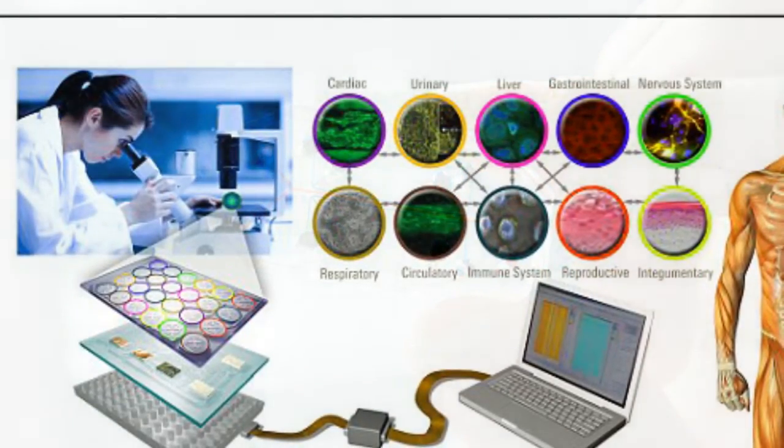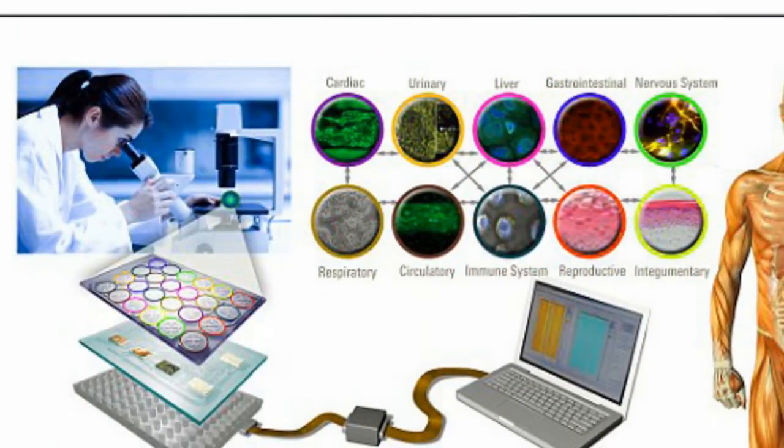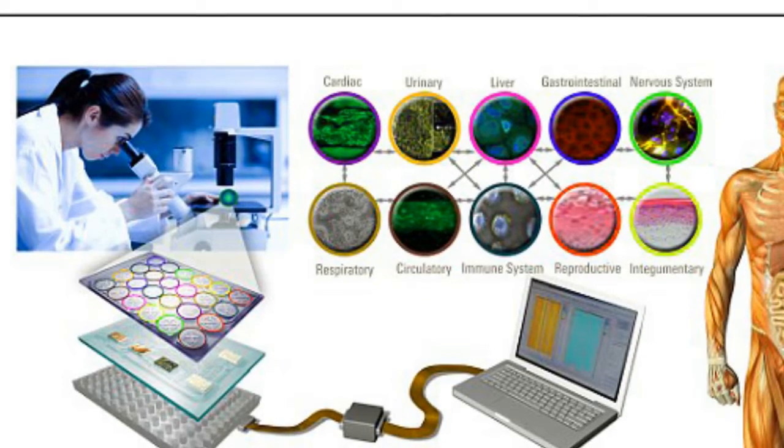Nutrients are supplied by blood that flows along the channels. Researchers at Harvard University have been able to create kidneys, gut, bone marrow and lungs on a chip using the technique.